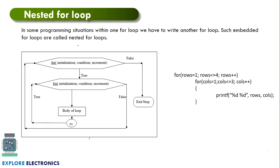Nested for loop: in situations where we need to write a for loop inside a for loop, we can use nested for loop. We have an outer for loop and after checking its condition, we go to the inner for loop. The inner for loop will be executed until its condition becomes false. Then it goes back to the outer for loop where the increment operation of the outer loop takes place, and then checks for the outer condition. If true, it comes back to the inner for loop again.